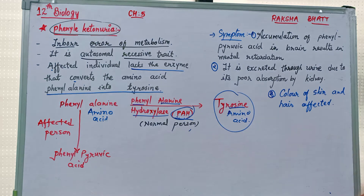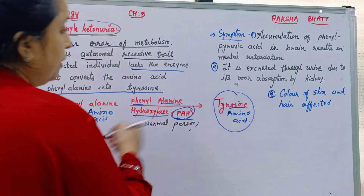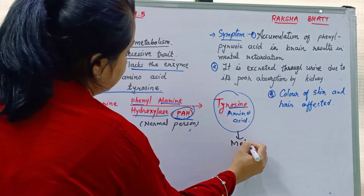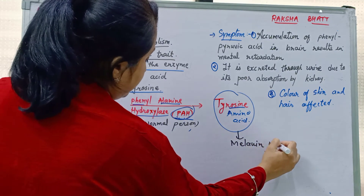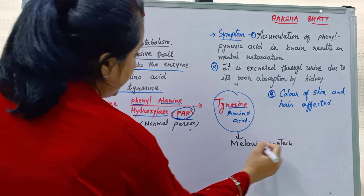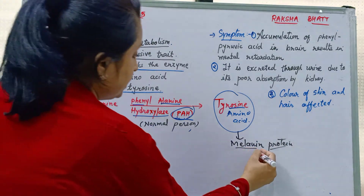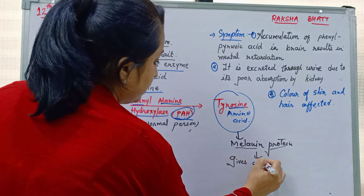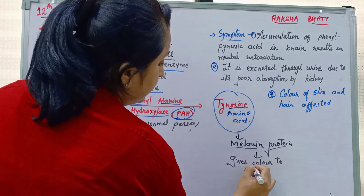Tyrosine is an amino acid that plays a very important role in melanin synthesis. Melanin is a protein which gives color to skin and hair.